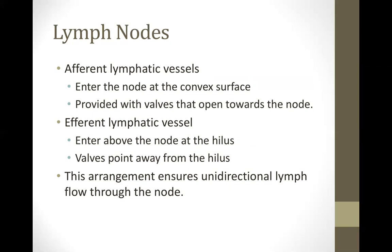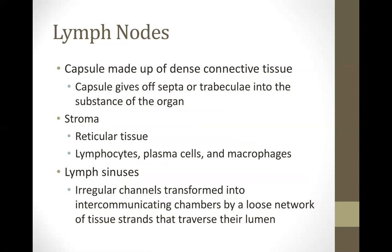This arrangement ensures unidirectional lymph flow through the node because of the valves — it is not bi-directional. The lymph node is composed of a capsule of dense connective tissue, with trabeculae extending into the substance of the organ. The stroma is reticular tissue (type 3 collagen). Supporting cells include lymphocytes, plasma cells with spoke-wheel appearance, and macrophages.